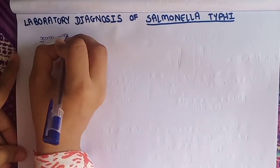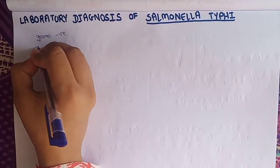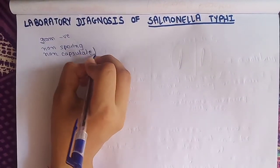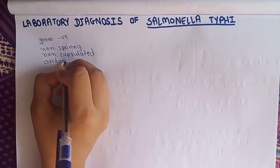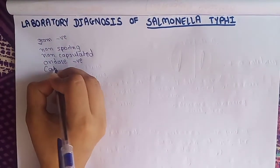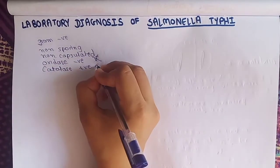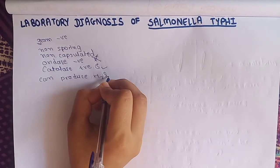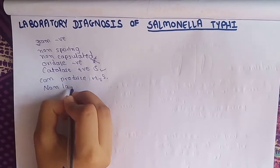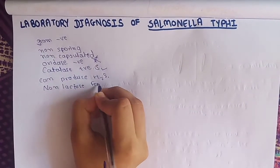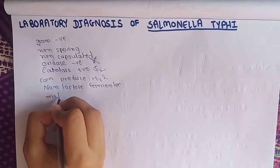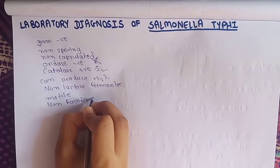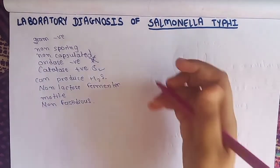In this video we will talk about laboratory diagnosis of Salmonella typhi. Salmonella typhi is gram-negative, non-sporing, and non-capsulated. It is oxidase negative and catalase positive — it won't produce oxidase enzyme but does produce catalase enzyme. It can produce H2S, is a non-lactose fermenter, is motile, and is non-fastidious, meaning it can grow without any special nutrients.